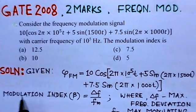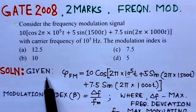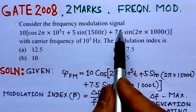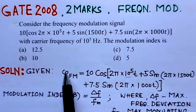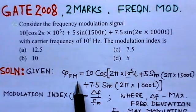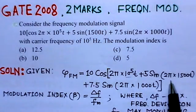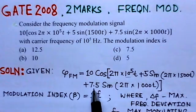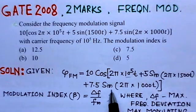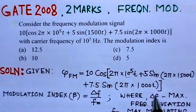The frequency modulated signal is given as: ψ_fm = 10 cos(2π × 10⁵t + 5 sin(2π × 1500t) + 7.5 sin(2π × 1000t)). This is the complete expression for the frequency modulated signal.